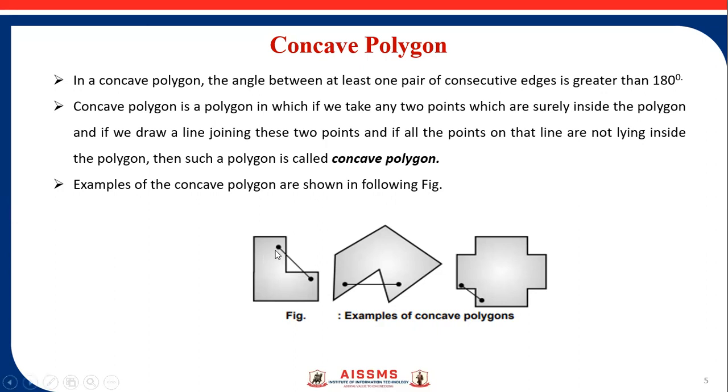Examples of this concave polygon we can see here. If we select two points inside the polygon and join these points with a straight line, all the points on the straight line are not inside the polygon. Some points lie outside the polygon. This is called a concave polygon.